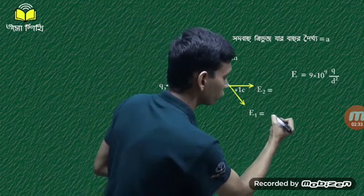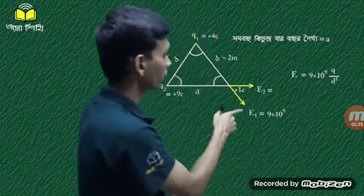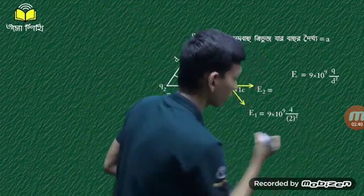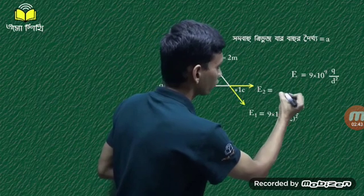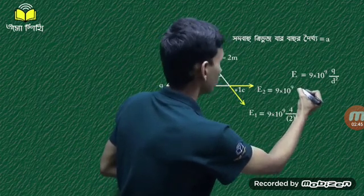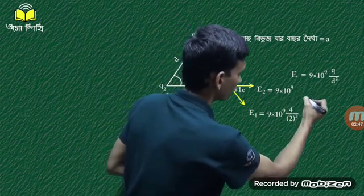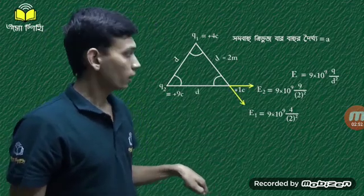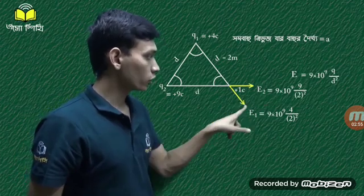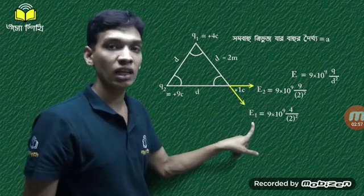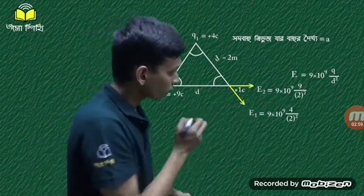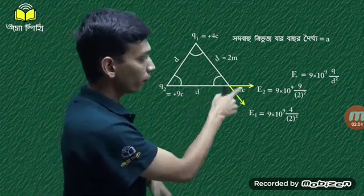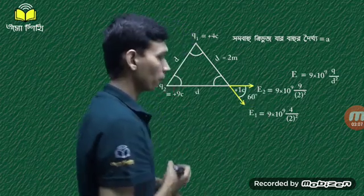E1 and E1 are both equal to 9 to 10 to 9. E1 is done with 4, then E2 equals 9 to 10 to 9. We are learning and we don't think we are able to do first-act. Why does this mean a theta-degree or do-act, 2-act?